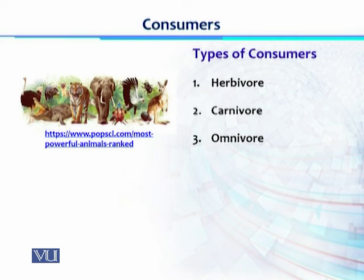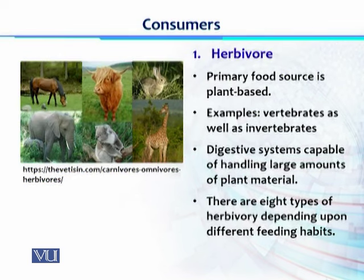Consumers can be divided into three different types: herbivores, carnivores, and omnivores. We will study all three types one by one. Herbivores are a group of consumers which use plants as their primary source of food. Their examples include several vertebrates and invertebrates.